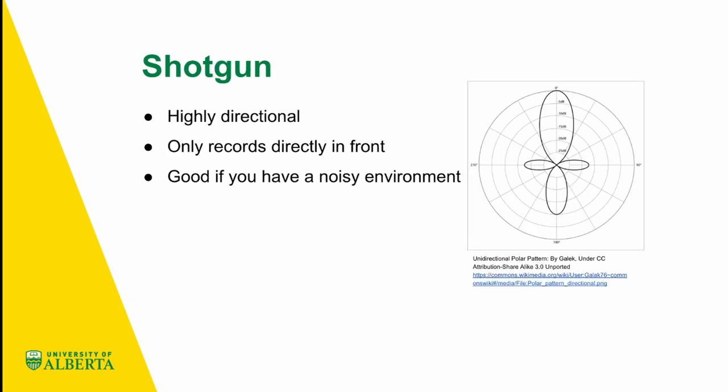Finally, we have the shotgun pattern. Shotgun mics look like long bars. They're highly directional, which means they basically focus in a line directly in front and a tiny bit behind the microphone. They're not going to pick up a lot of noise around the sides. If a person moves too far to the right or left, the mic won't pick them up at all. You'll often see these on top of TV cameras out on the street. They're really good for getting rid of sounds except for the particular speaker you want, and best for formal, stationary settings.